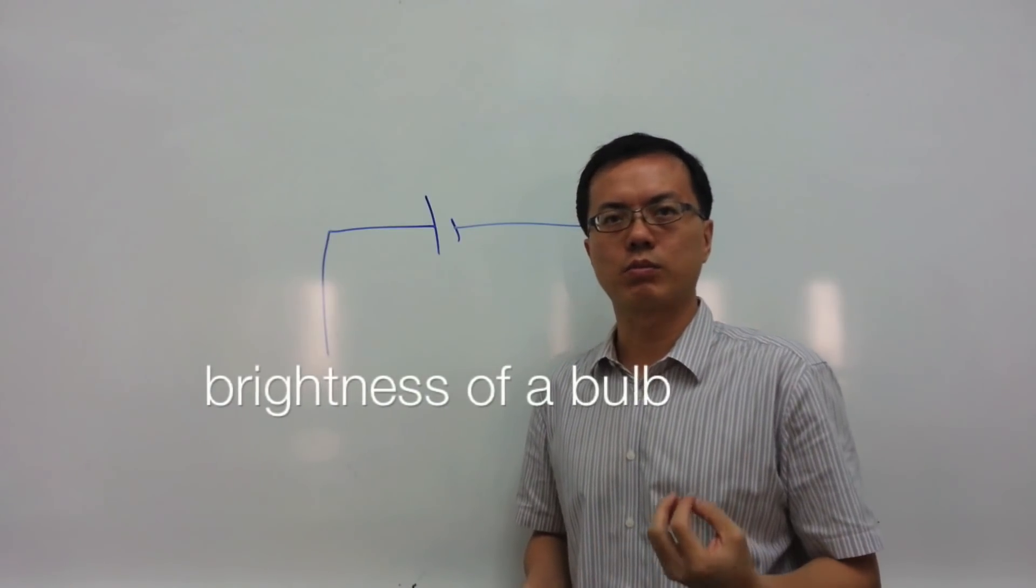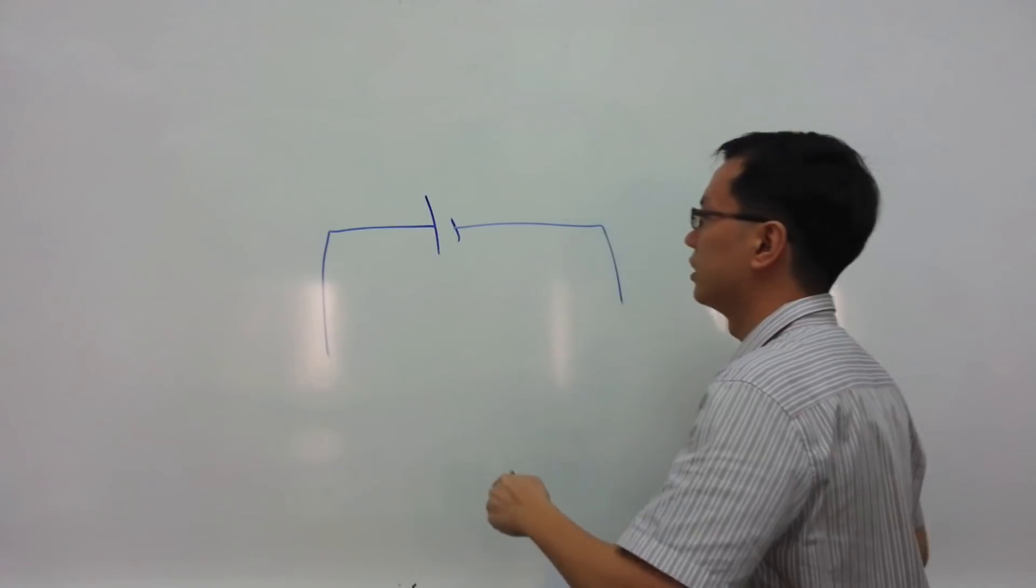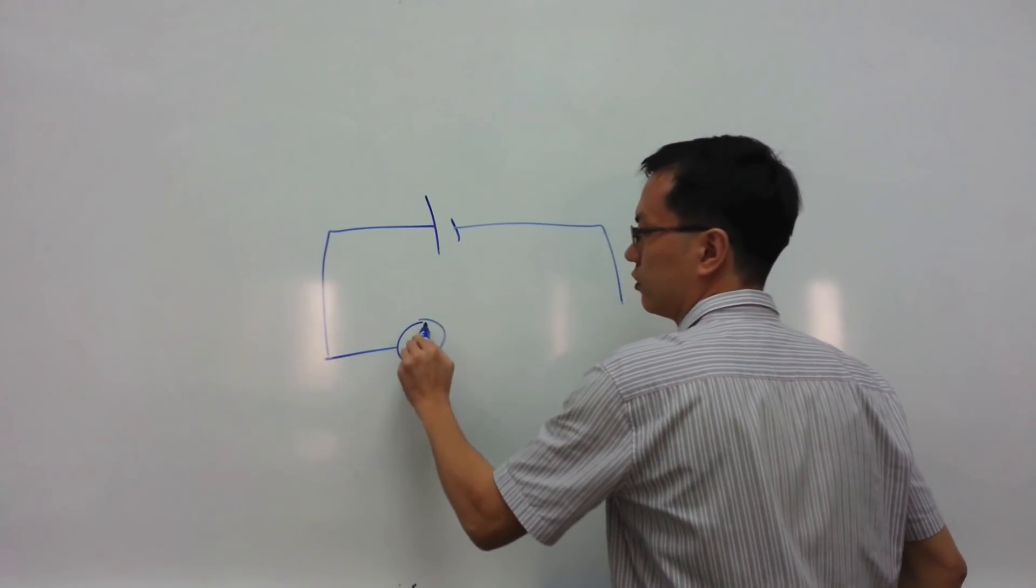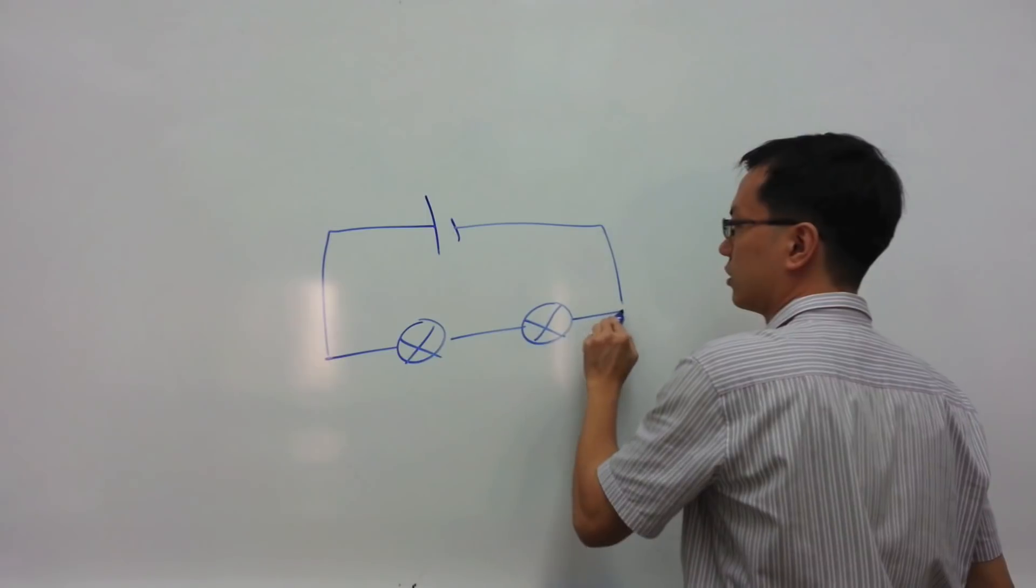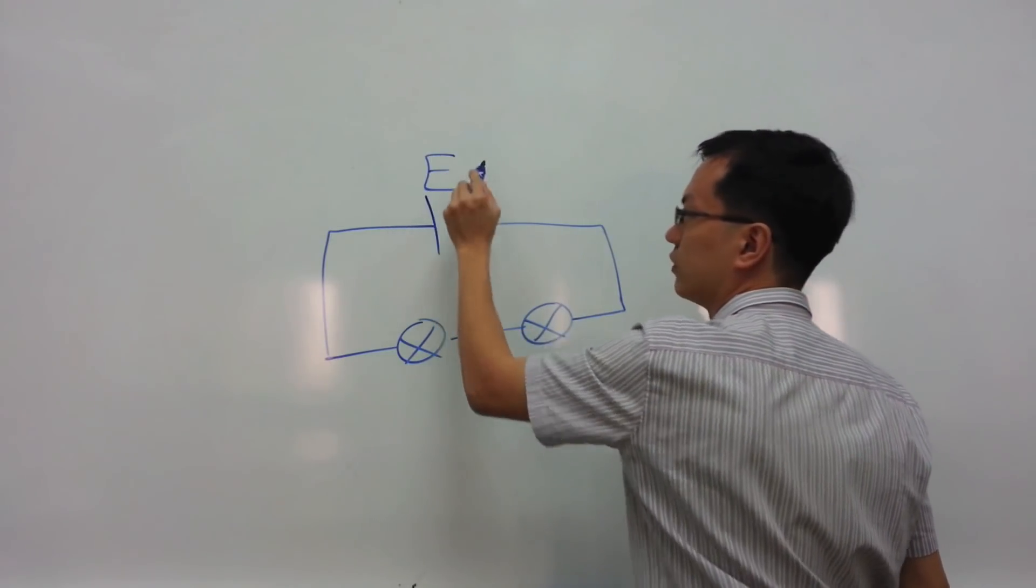What determines whether a light bulb glows brighter or dimmer? If we have two light bulbs arranged in series with an EMF of E,